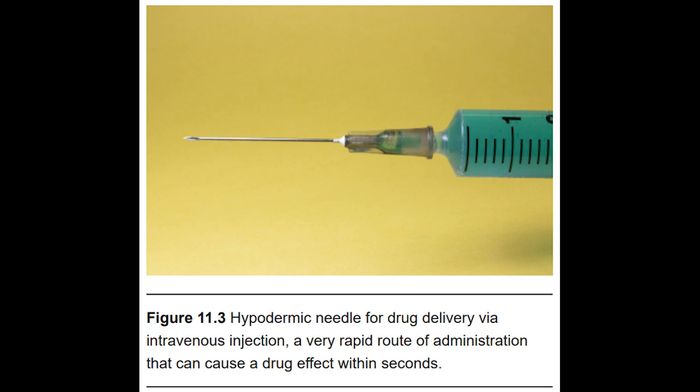Alternative injection routes are less common for misused drugs, each with slightly different advantages and disadvantages. Intramuscular, or IM, injections — like a flu shot into the deltoid muscle of the arm — are somewhat slower than IV injections, tens of minutes rather than tens of seconds, but are much easier to perform. In a subcutaneous, or SC, injection, solution is injected into the fat layer underneath the skin, making it ideal for lipid-soluble drugs.